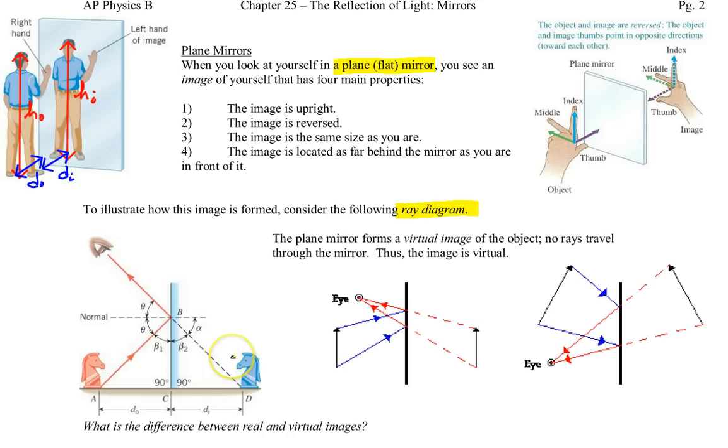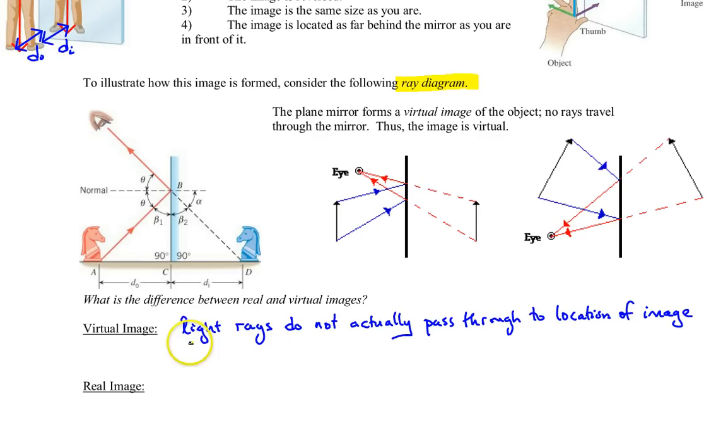So a virtual image, the light rays don't actually pass through the mirror to the location where the image is forming. The main test is the image cannot be captured on a piece of paper or film. And a real image, which is not shown here but you'll see soon, is an image where the light rays do pass through and form an image at that location. Hence the image can be placed on a piece of paper or film.